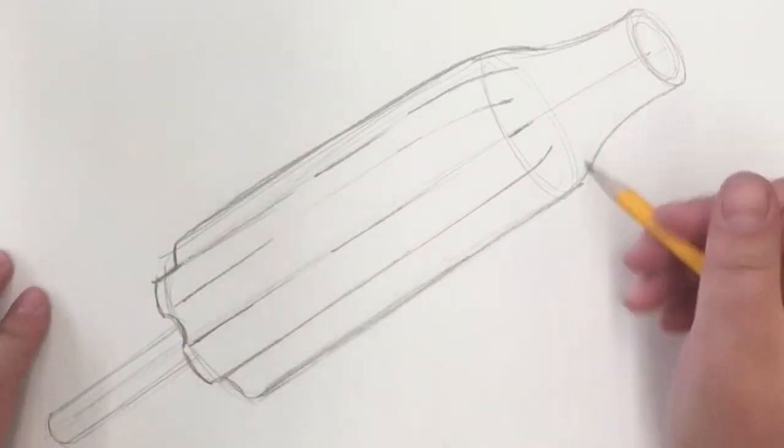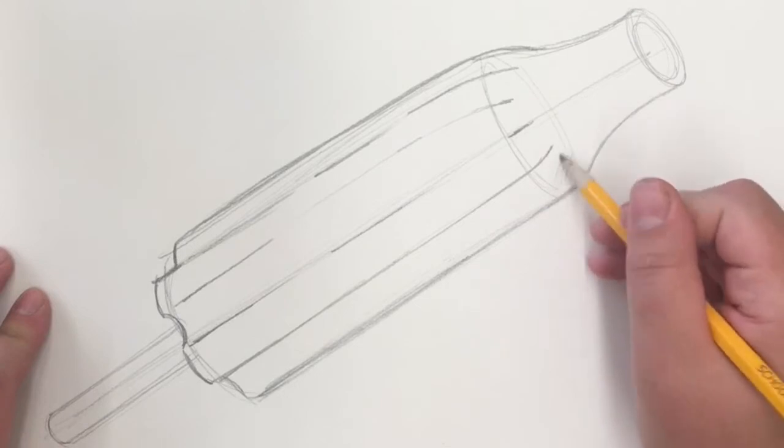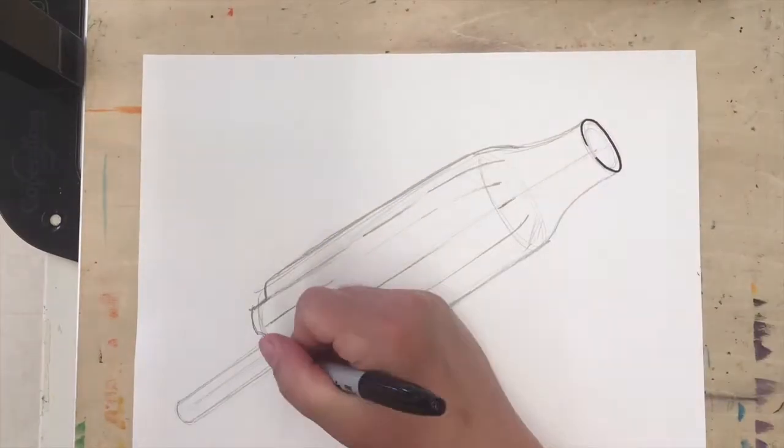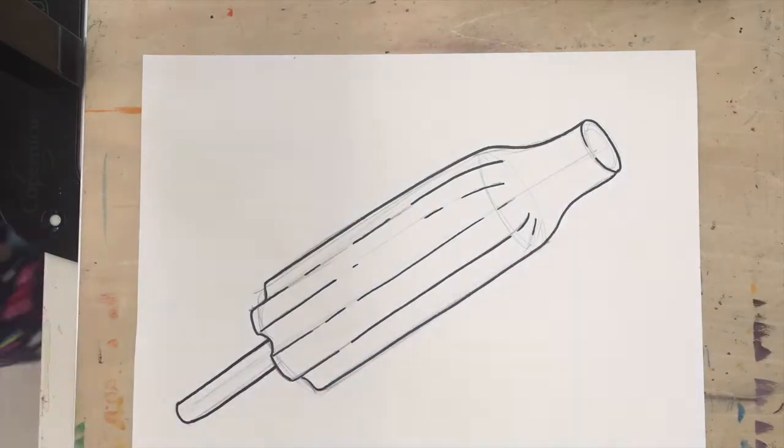I'm going to outline my final pencil marks with a black sharpie. You can use a black colored pencil or crayon if you don't have sharpies. We are not going to outline those first few sketch marks including the ovals and that first diagonal line. If it's confusing, you can always erase those lines before you start outlining.